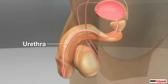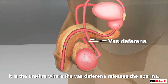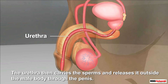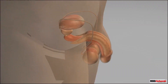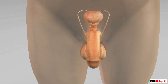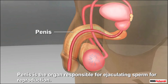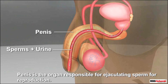The next organ is the urethra. Like the vas deferens, it is also a long tube that arises from the urinary bladder. It is in the urethra where the vas deferens releases the sperms. The urethra then carries the sperms and releases them outside the male body through the penis. The penis is a thick and muscular organ responsible for ejaculating sperm. Urethra and penis together form a common passage for the release of both urine and sperms.